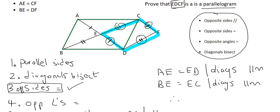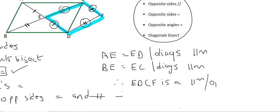So what we can do is we can say, therefore, that EDCF is a parallelogram. And the reason for that is that the opposite sides of the quadrilateral—we can't call it a parallelogram yet—we'll say that the opposite sides of the quadrilateral are equal.